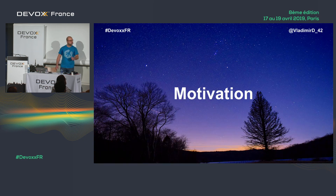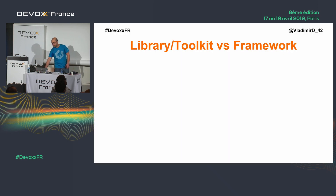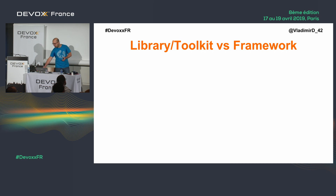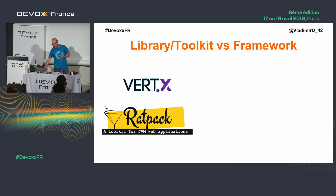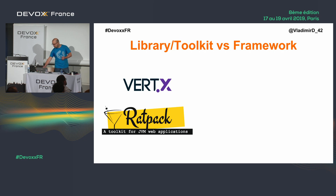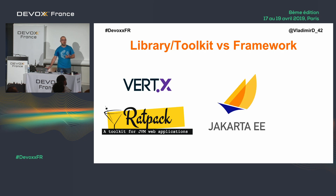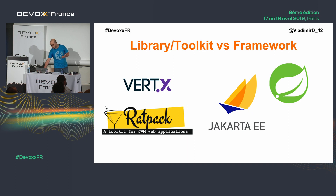Why should we care about this? If today you decide to build an application, there are two approaches: library and toolkit, or framework. With libraries, you can choose something like Vert.x for reactive JVM applications, or Reakt. With the framework approach, you can go with Jakarta EE, Spring, or now Micronaut.